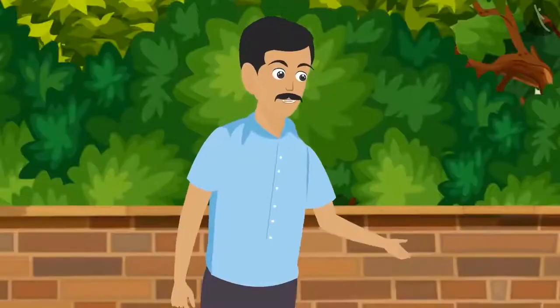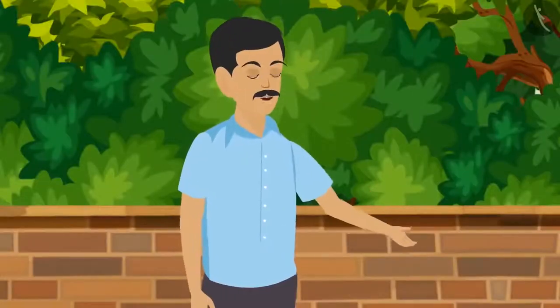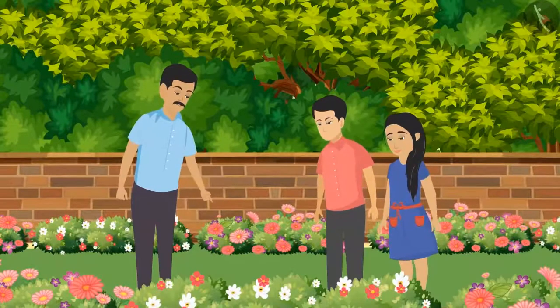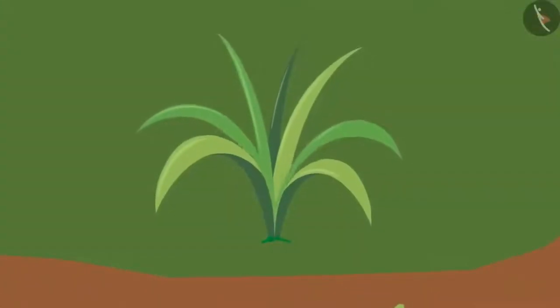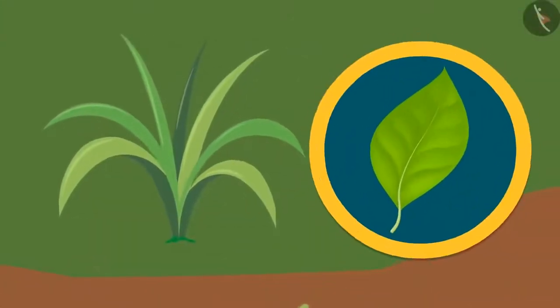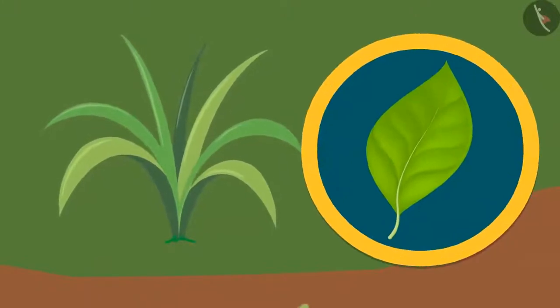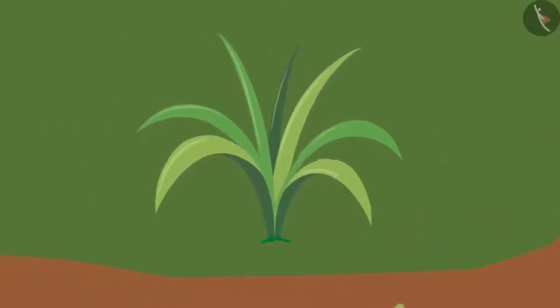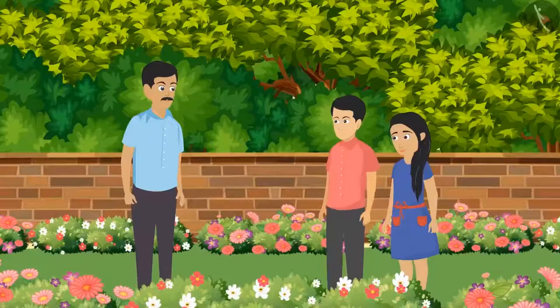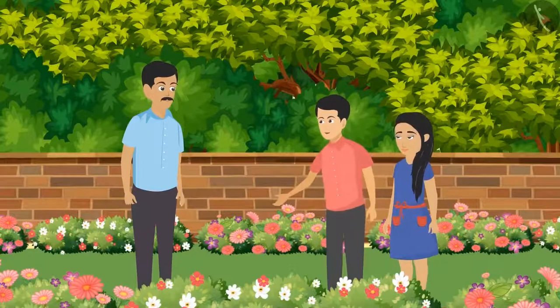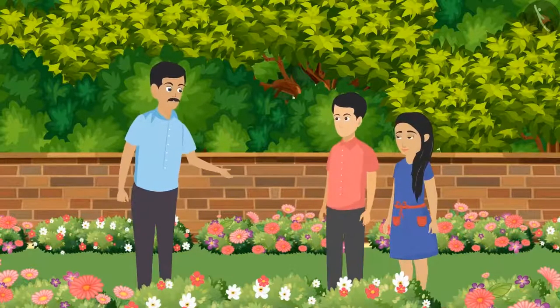Sundar uncle points out grass leaves, which are different from other leaves — thin but longer. Their leaf venation is parallel, unlike the reticular venation seen in other plants. The kids find this interesting and ask if there is anything more to know.